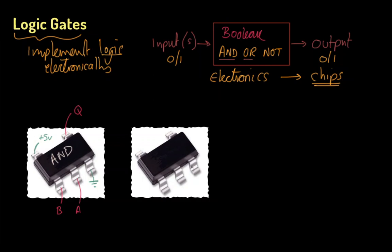An OR gate looks exactly the same externally — somewhat surprising, but maybe not. The whole point about these packages is that the internal components are different but the packaging remains the same, because they're designed to fit on a circuit board with pins the same distance apart. Inside, you'd see different electronic circuitry implementing an OR Boolean operation. It has the same earth pin, plus five volts pin, two inputs A and B, and an output Q.